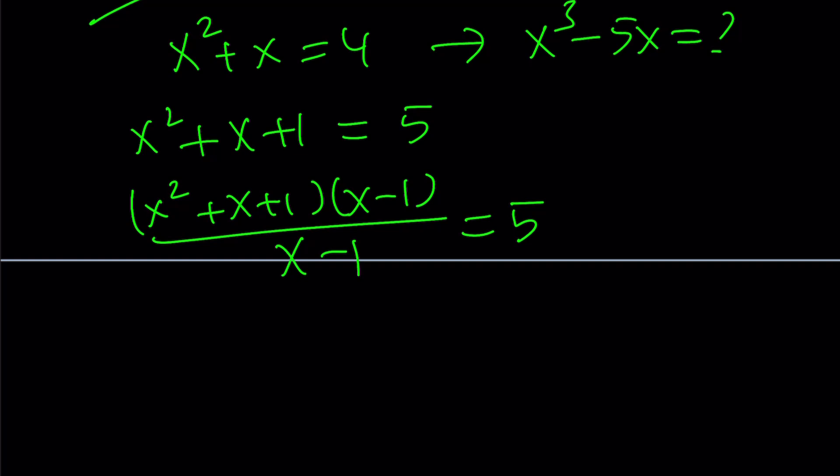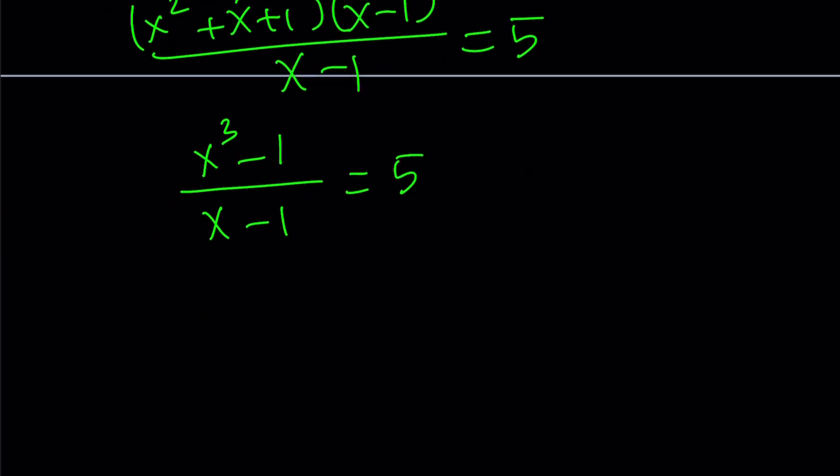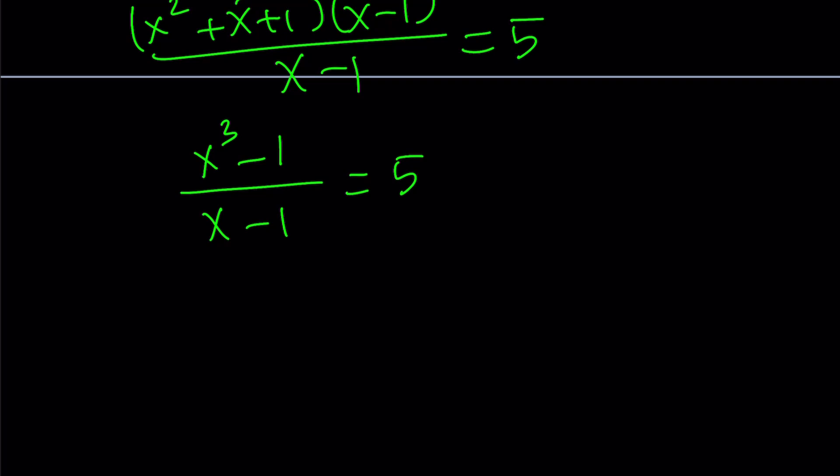But something nice happens in the numerator. This becomes x cubed minus 1 from difference of two cubes. A cubed minus b cubed formula. And what does this give me? This gives me what I'm looking for. Distribute, cross multiply, and then put the 5x on the left-hand side and add one to both sides. And you get what you want.